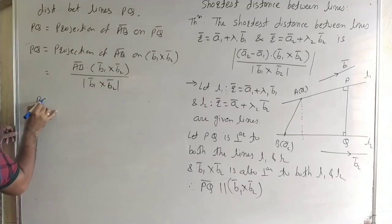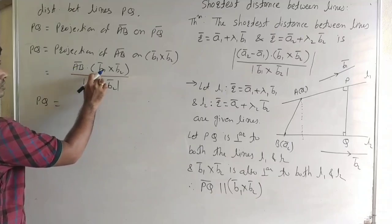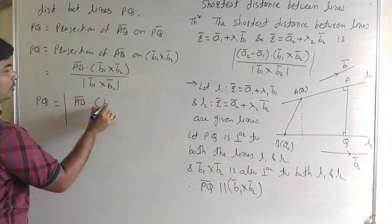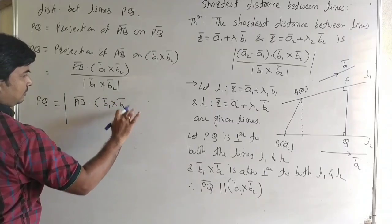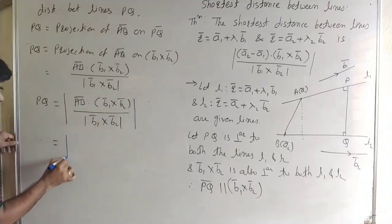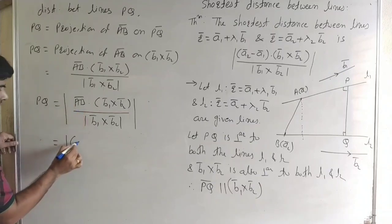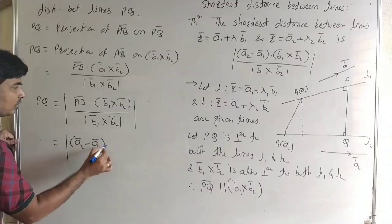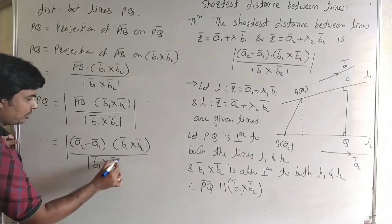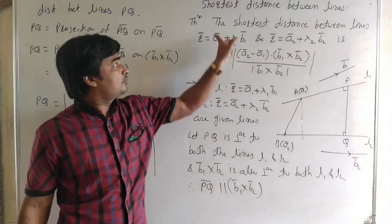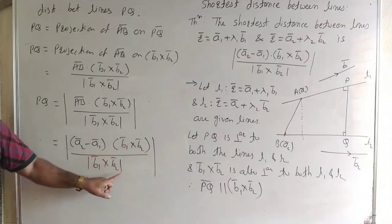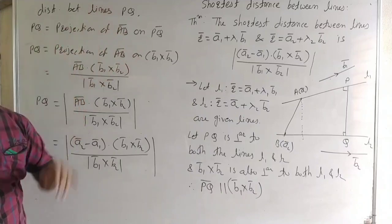Since the scalar product can be negative, we take the modulus. So PQ equals the modulus of vector AB · (b̄₁ × b̄₂) divided by the magnitude of b̄₁ × b̄₂. Vector AB equals the position vector of B minus position vector of A, which is ā₂ − ā₁. Therefore, the shortest distance is |( ā₂ − ā₁) · (b̄₁ × b̄₂)| / |b̄₁ × b̄₂|. This is the vector form formula for shortest distance between lines L1 and L2.